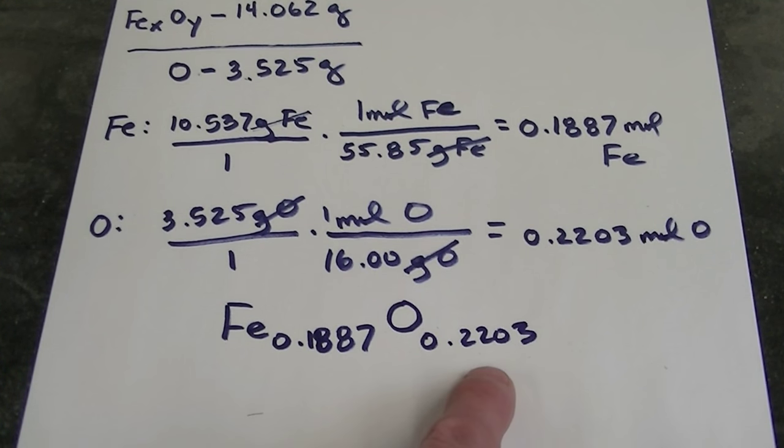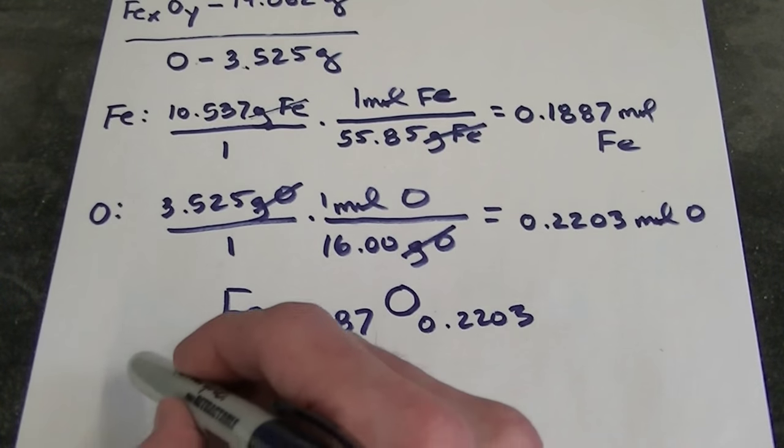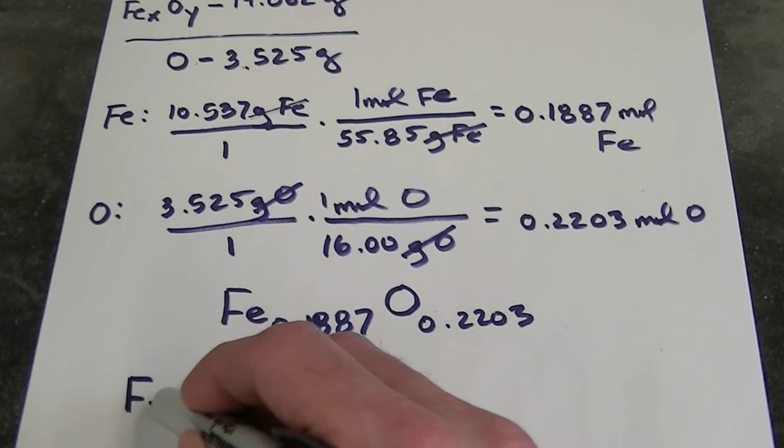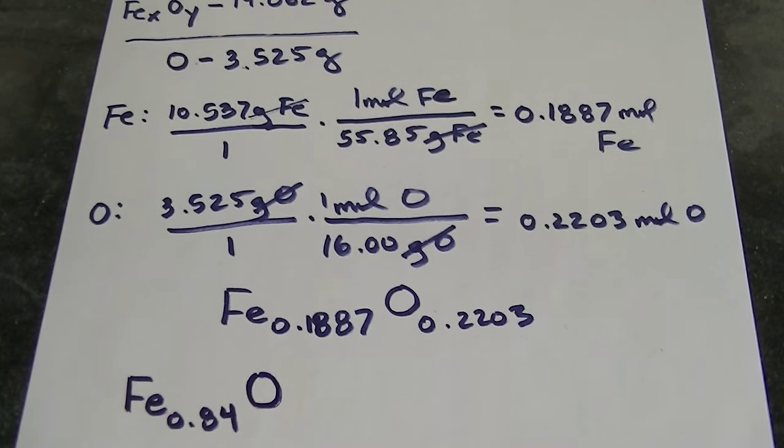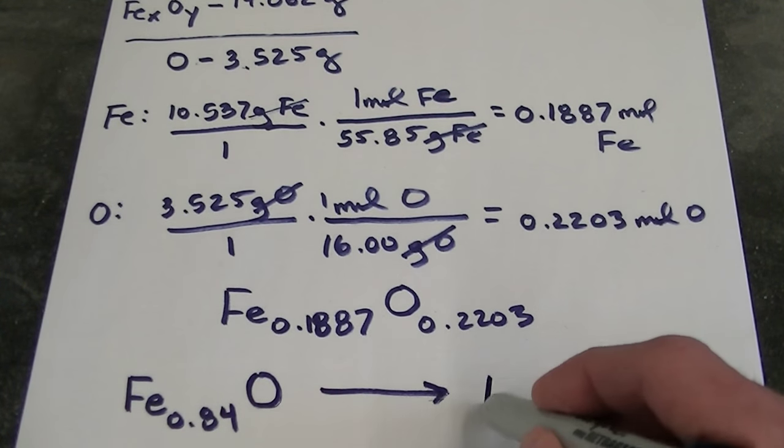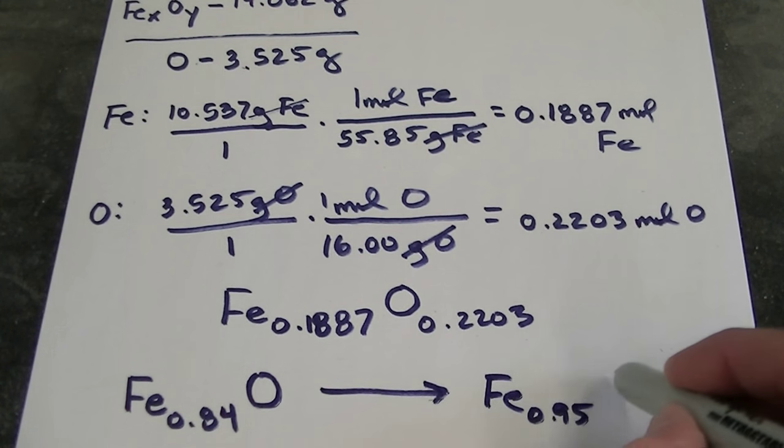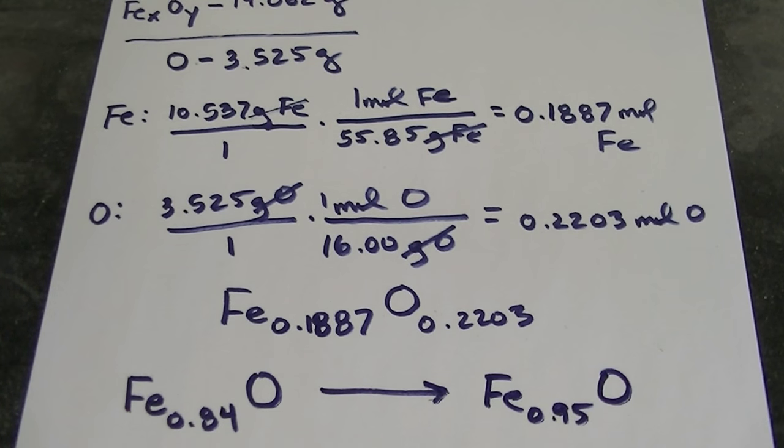Now it might surprise you that this doesn't come out at a perfect one-to-one ratio. Well, it turns out that iron oxide is what we call a non-stoichiometric compound. There are some compounds that don't follow a perfect whole number stoichiometry, and iron oxide happens to be one of these compounds. It is often the case that iron oxides are going to be found in the ratio of, on the low side, 0.84 irons to every oxygen, all the way up to, on the high side, about 0.95 moles of iron for every oxygen. Let's see where our compound fits, or the one that we measured in this range.